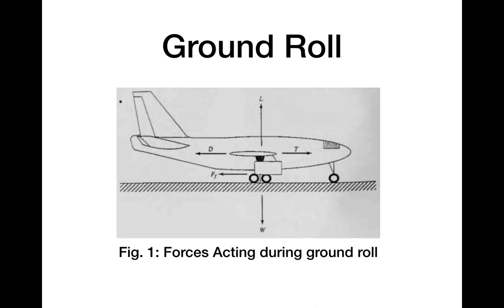Next, we discuss the first phase of takeoff: ground roll. The diagram shows the different forces acting during ground roll. There are four forces: thrust, which drives forward flight; lift, which acts vertically; drag; and weight. Additionally, during ground roll there is a frictional force because the aircraft tires are in contact with the ground.